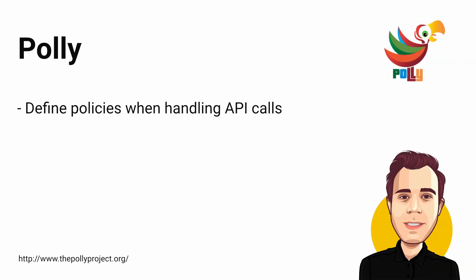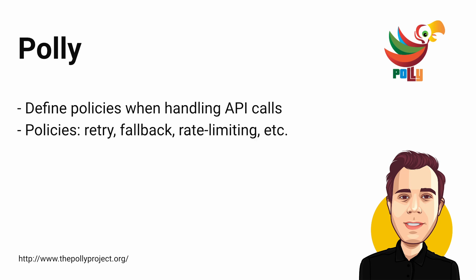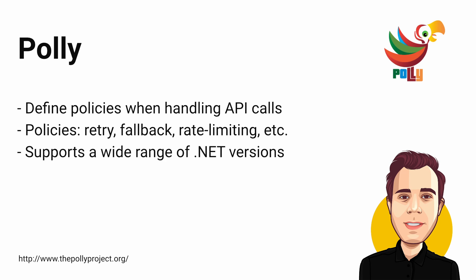Polly is a library that allows developers to express policies when handling API calls. You can define a retry policy, fallback policy, rate limiting policy, and much more. Besides .NET 6, Polly also supports a wide range of older .NET technologies because it targets .NET Standard 1.1. Polly is a library I haven't used myself, but I've heard so much positive feedback from the community that I wanted to include it in this list.